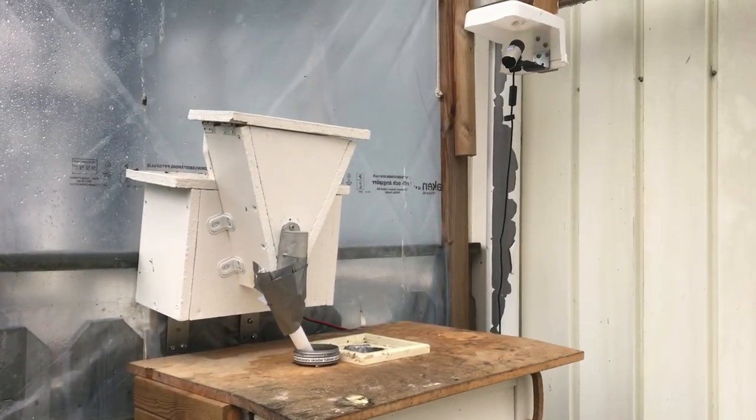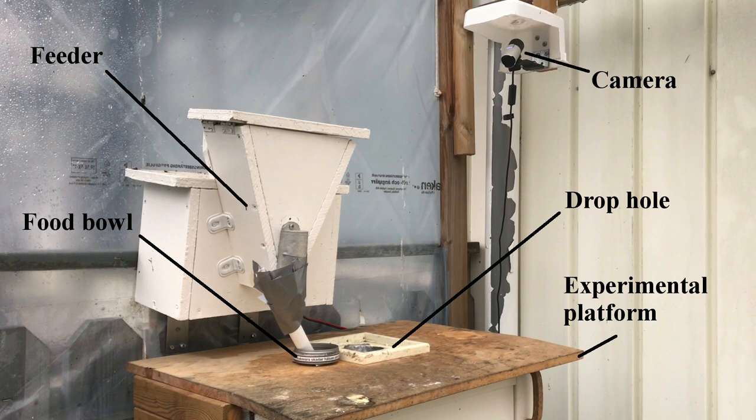And we're gonna take a closer look and see what's on top. You can see that we have a camera that is recording what's going on on the experimental platform. And then we have the drop hole which is the hole where the magpies come and drop the litter into the machine. And you also see that we have a little food bowl which the feeder dispenses the food into.